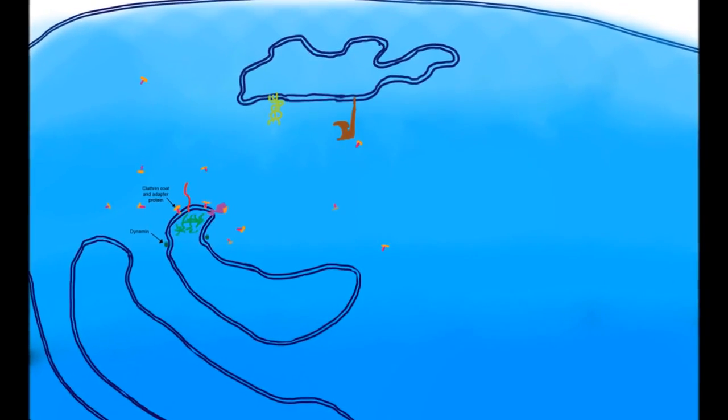As vesicular budding takes place, molecules of dynamin form around the neck of the bud, where they aid in vesicular pinching. The vesicle then moves through the cytoplasm towards the early endosome, aided via cytoplasmic actin filaments.